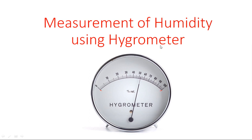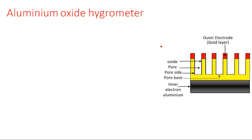The first method I explained in the previous video is the microwave refractometer. The second type is the aluminum oxide hygrometer. It consists of some outer electrodes which are coated in a gold layer, an oxide layer, pore material, pore side, pore base, and inner electrode aluminum.